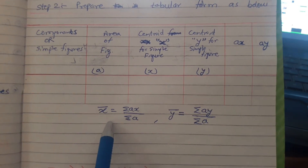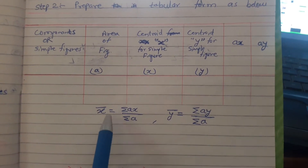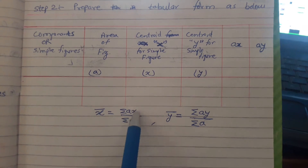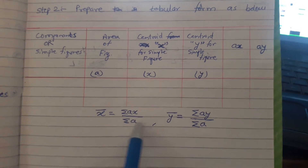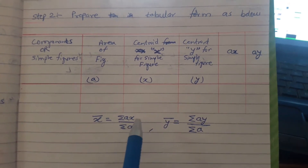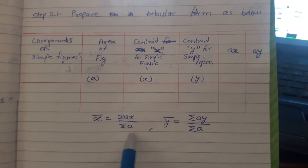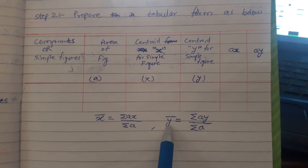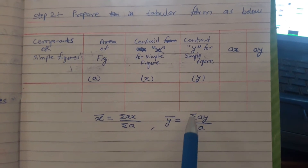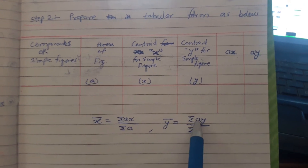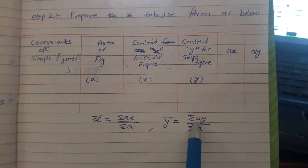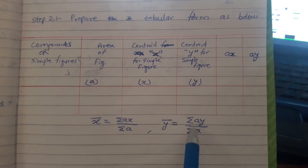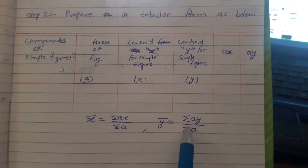The formula for finding x̄ is: x̄ = Σax / Σa. For finding ȳ, the formula is: ȳ = Σay / Σa.